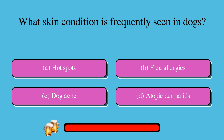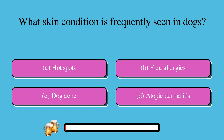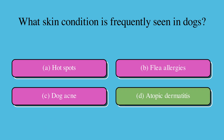What skin condition is frequently seen in dogs? A. Hot spots, B. Flea allergies, C. Dog acne, or D. Atopic dermatitis. The correct answer is D. Atopic dermatitis.